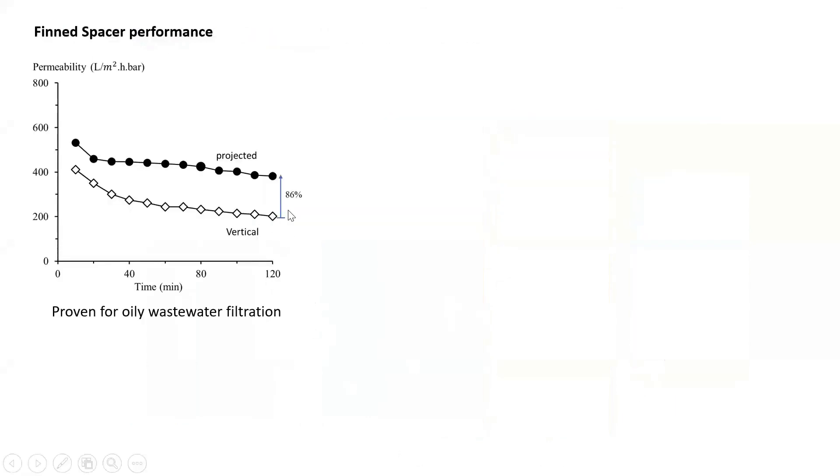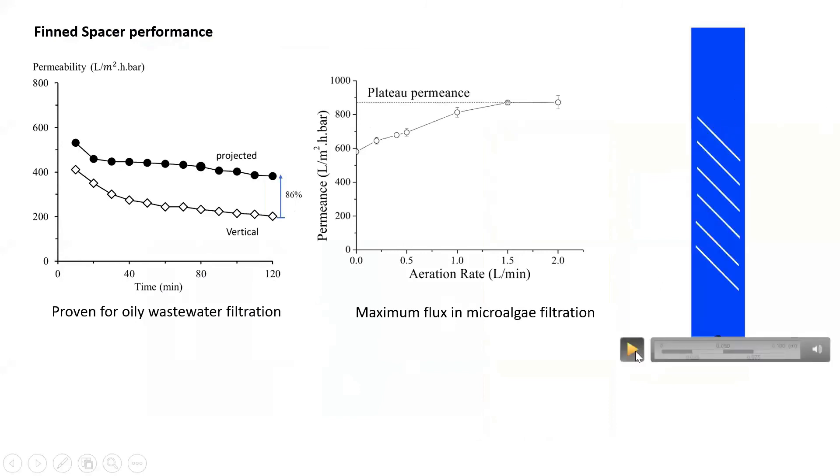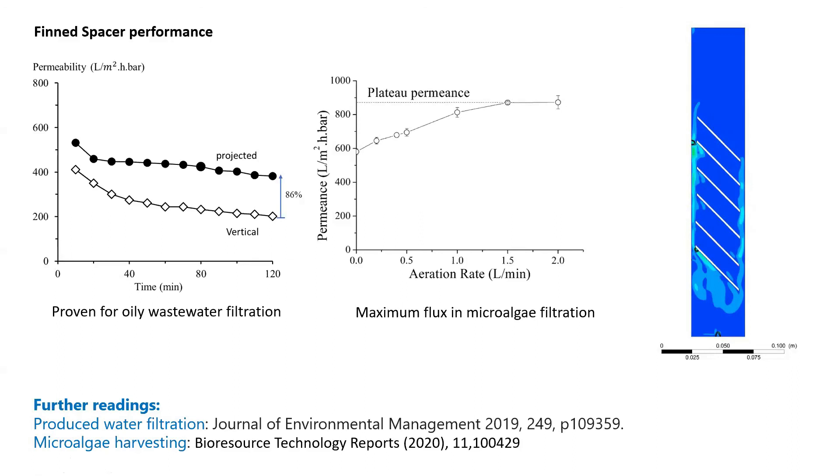We run it in lab scale experiment for oily wastewater, and we see actually 86% improvement in permeability. We run it for microalgae filtration, and we achieve quite high permeability, close to 900. We try to perform the simulation through CFD, and here you can see how the fin spacer we put in between the panel can direct the flow of the bubble to the membrane surface, as well as induce the secondary flow to the other side to perform the cleaning as well. It's not like this side is static, but actually there are secondary flows that help to clean the membrane on the side that is not projected by the membranes. Recently we published in Bioresource Technology Report on this application.